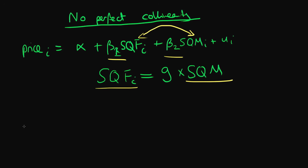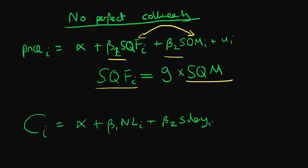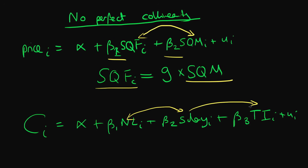Let's think about another example where this issue of perfect collinearity might come up. Let's say you were interested in estimating how consumption depends on someone's non-labour income plus the level of salary which an individual has, but you also included their total income in your regression. The problem here is that there is an exact relationship between non-labour income, salary, and total income — specifically, total income equals non-labour income plus salary. So if I know an individual's salary and their non-labour income, I also know that individual's total level of income.